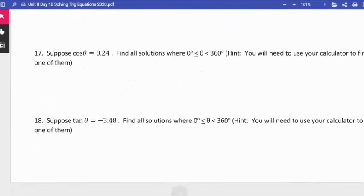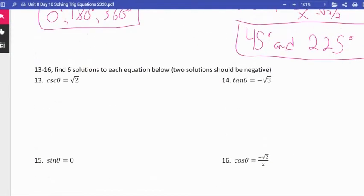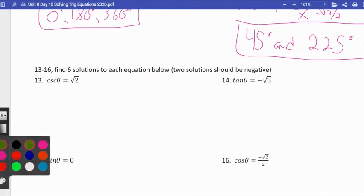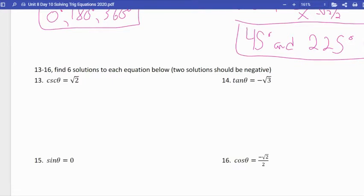Alright, the last one, two, three, four, five, six questions. We'll go green. 13 through 16, find six solutions to each equation below. Two solutions should be negative.